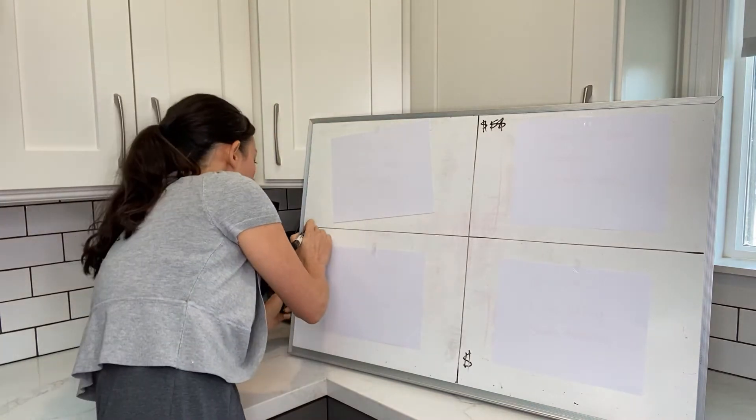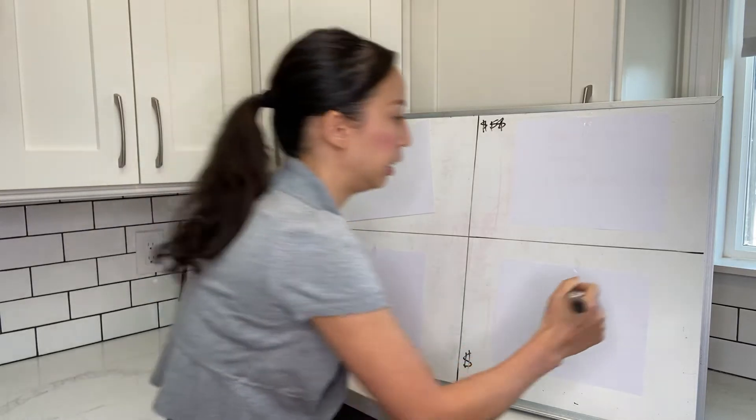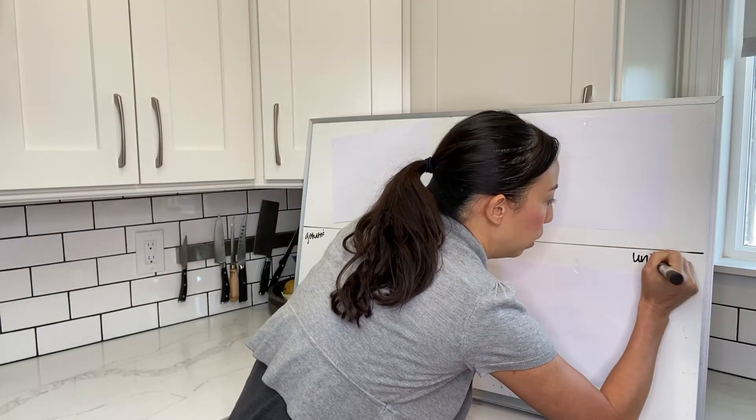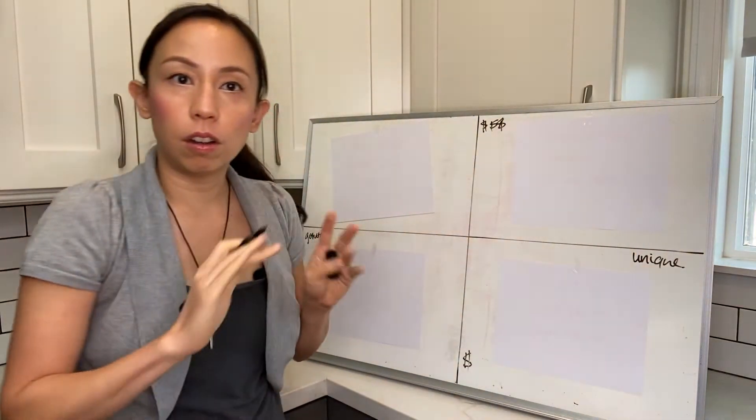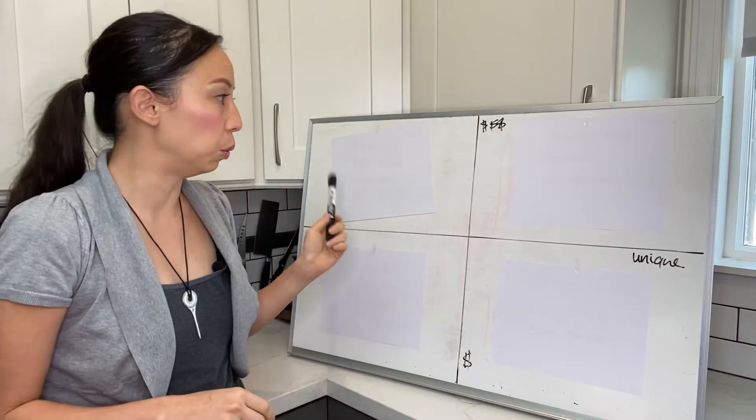To the left we're going to have generic, and on this side we're going to have unique. Literally every single wine that you ever think of buying can fall into these four categories.